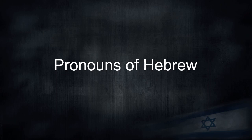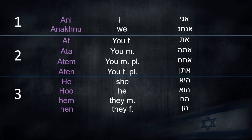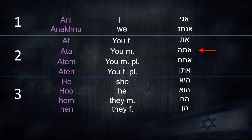First, let's look at the pronouns of Hebrew. Ani — that means I. Anachnu — that means we. At — that means you, female. Atta — that means you, male.